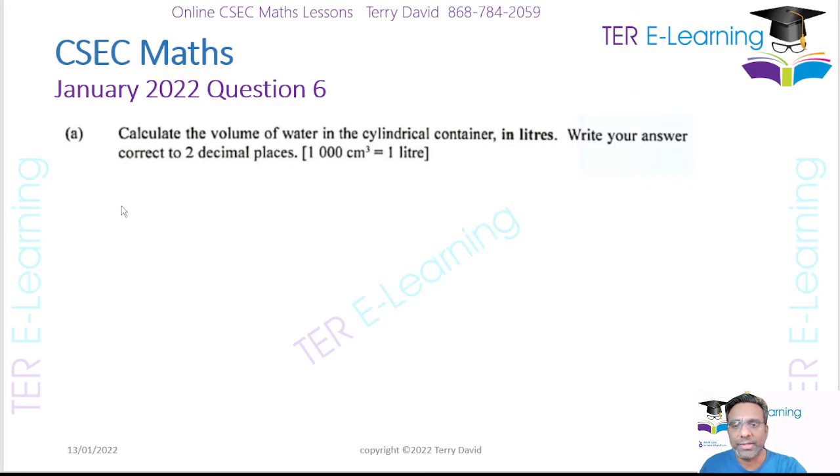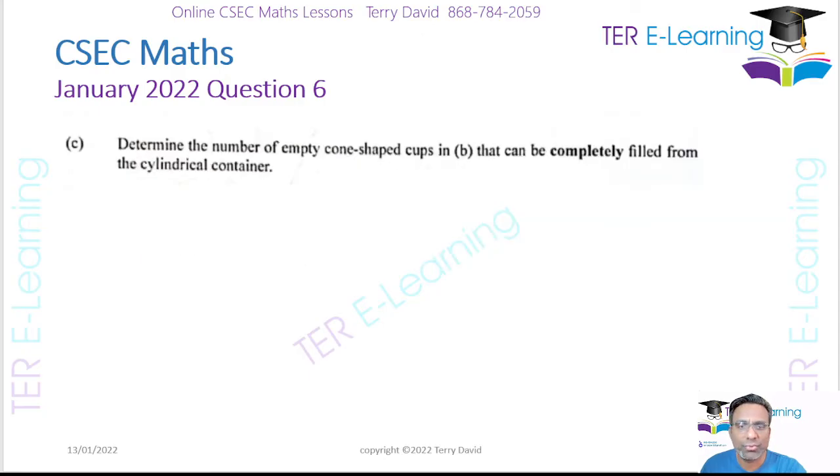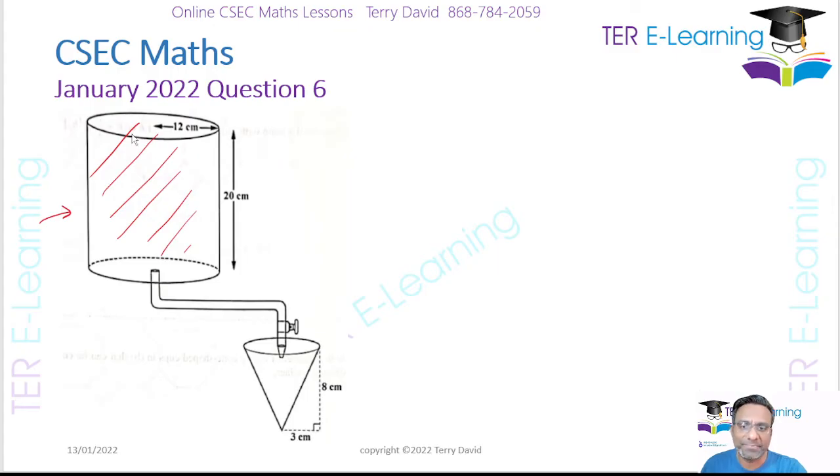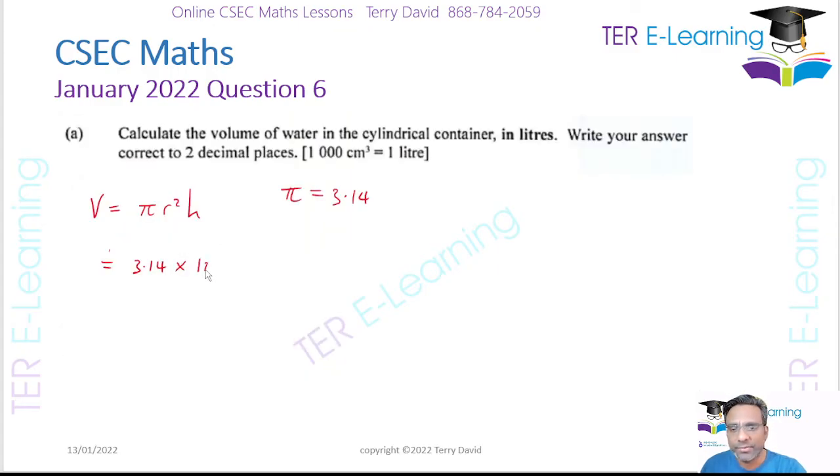Now if it's a cylinder, the volume of a cylinder is simply V = πr²h. Let's see, did it tell us what to take pi as? I don't see pi but I'm going to take pi as 3.14. So it's going to be 3.14 multiplied by my radius squared. The radius is 12 centimeters, so this is going to be 12 squared multiplied by my height which is 20 cm.